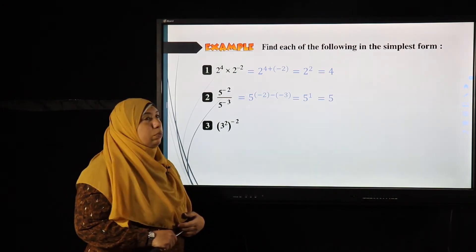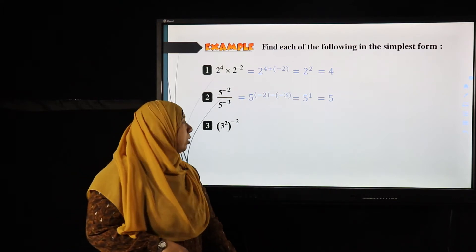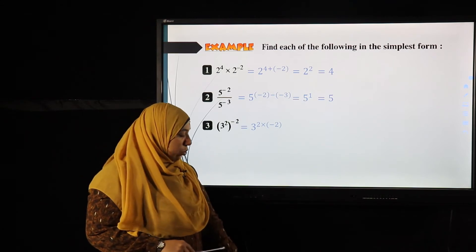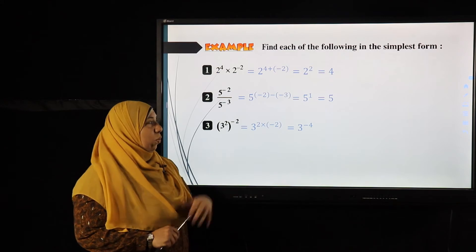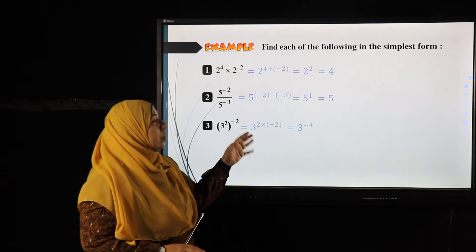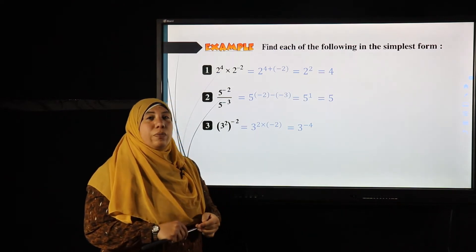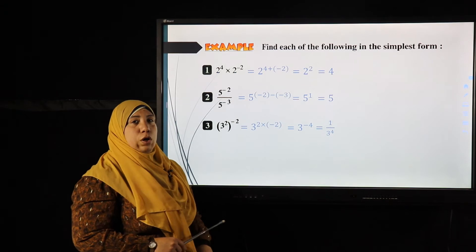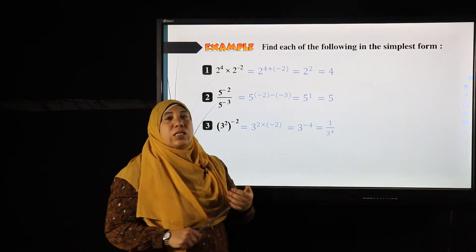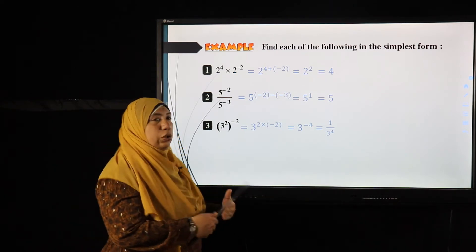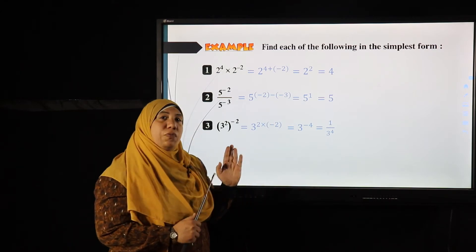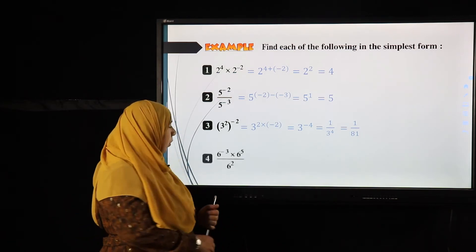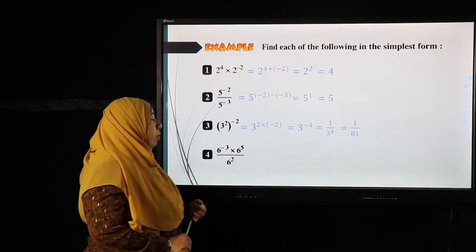Example three: three squared raised to the power negative two. We have one base and two powers, so we multiply the powers: three to the power two times negative two equals three to the power negative four. Now there is nothing more to simplify, and since it is a negative power, I find the reciprocal: one over three to the power four. Then the final answer is one over 81.